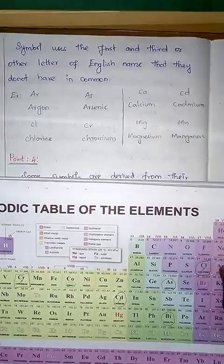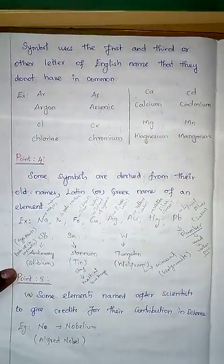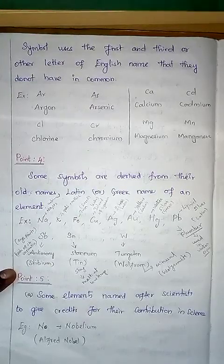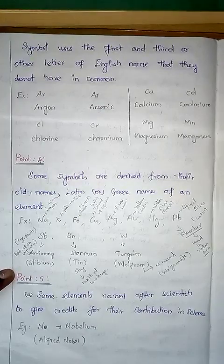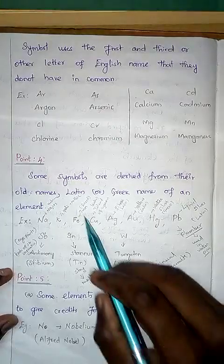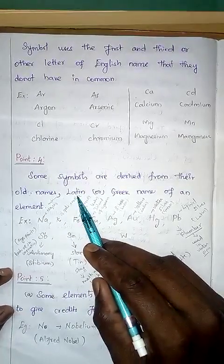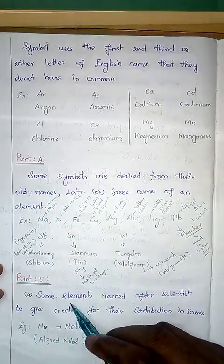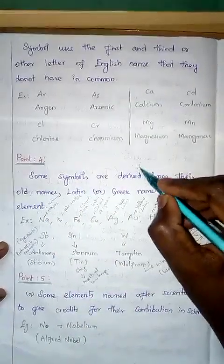Similarly for manganese and magnesium. Now come to point number four: some symbols are derived from their old names — that is, their Latin or Greek names. There are 11 such elements.